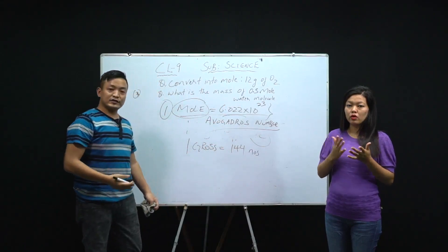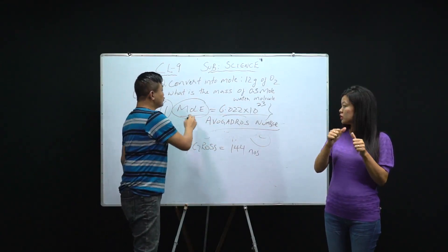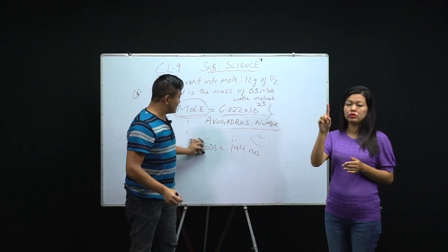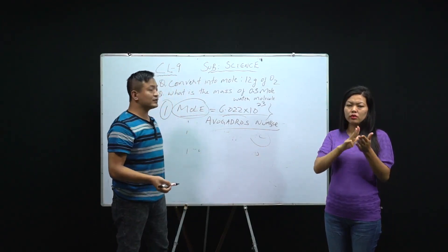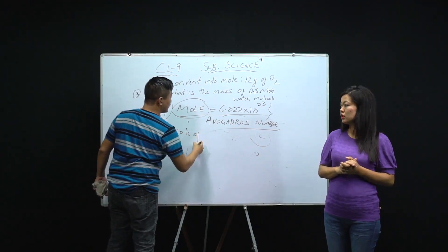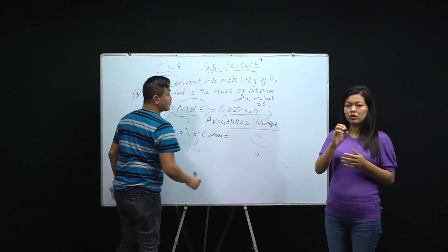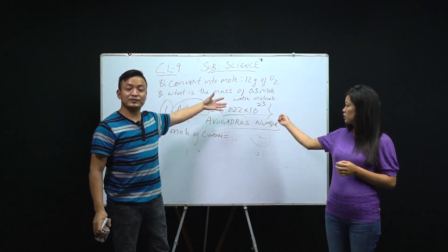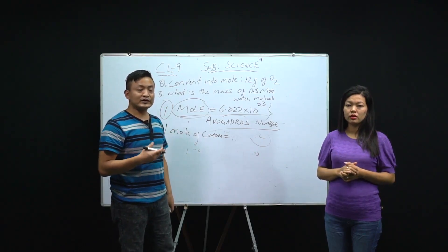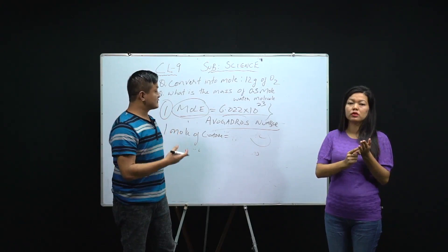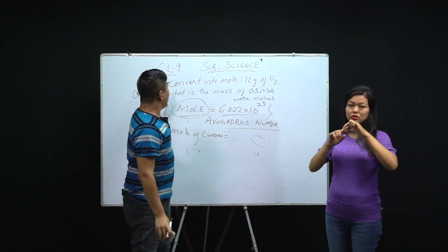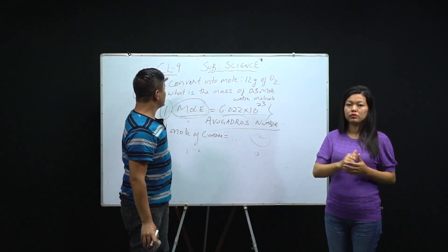So in one mole we have 6.022 × 10²³ particles. Now if I say one mole of carbon atoms, then we will have that many carbon atoms. From here, one important formula I want to give you — this formula is important because we'll be solving numerical problems: how to convert into moles and how to calculate the mass.